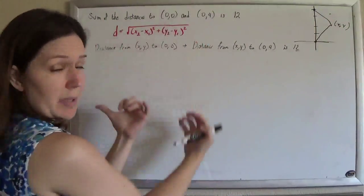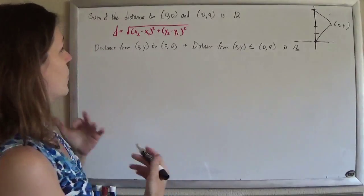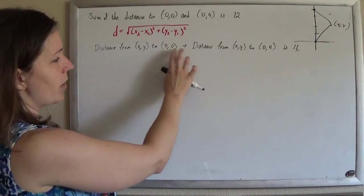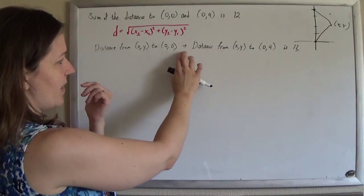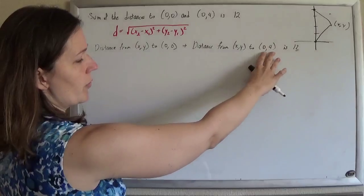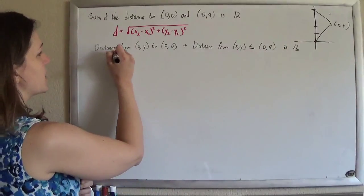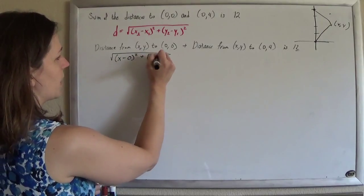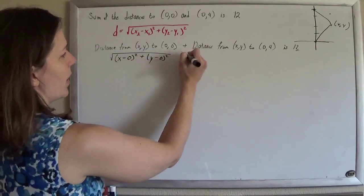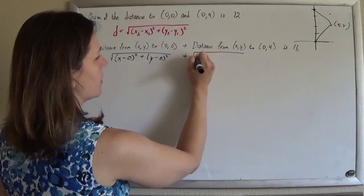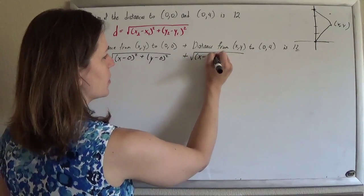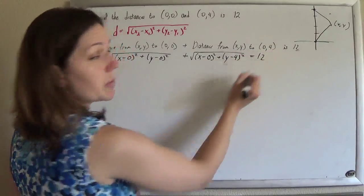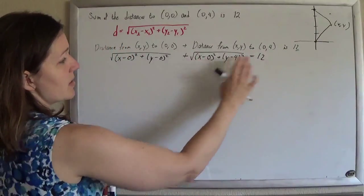But we don't need to know that just to be able to translate it. When we translate this, we're going to use our distance formula to find the distance from our point to (0,0), and add that to the distance from our point to (0,4), and that's supposed to be 12. So: the square root of (x−0)² + (y−0)², plus the square root of (x−0)² + (y−4)², equals 12. So we have the sum of the distances equaling 12.